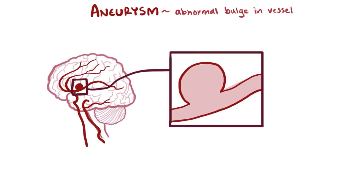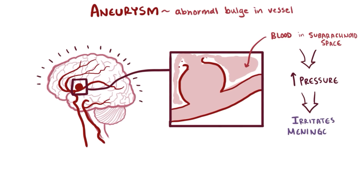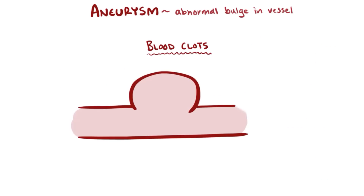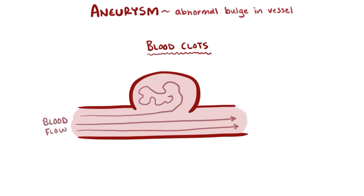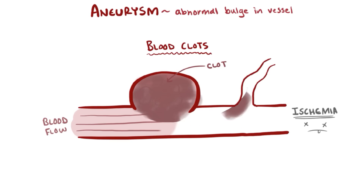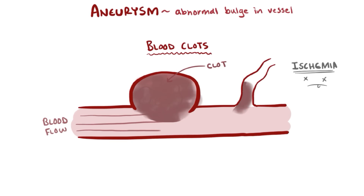If an aneurysm ruptures in the brain, blood will pool into the subarachnoid space, putting pressure on brain tissue and irritating the meninges, causing symptoms like a very sudden and intense headache and the inability to flex the neck forward. Aneurysms can also cause blood clots: as blood flows past the aneurysm, some blood may pool into the extra lumen space caused by the aneurysm itself. This blood isn't being pushed along as quickly, and when blood stays still for too long, it clots. The clot might become so large it blocks off the entire blood vessel, causing tissue ischemia, or it could break into smaller pieces called emboli and get wedged into small blood vessels, also causing ischemia.